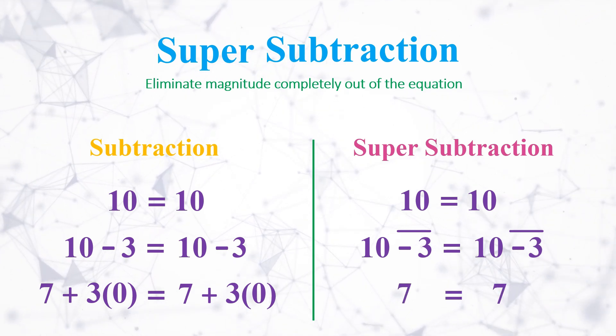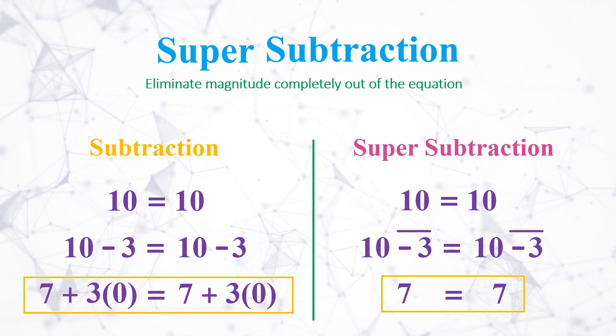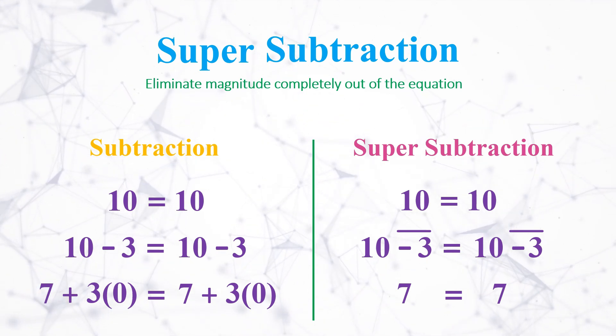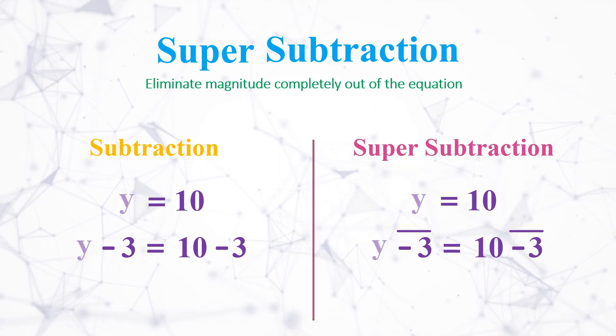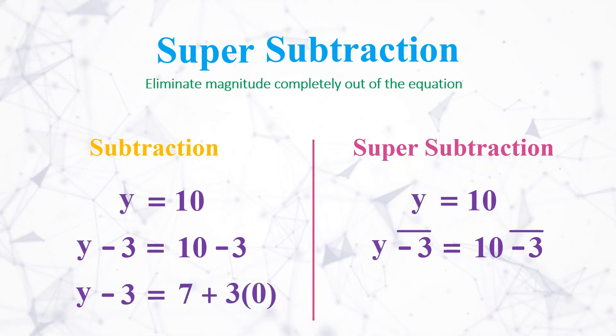But if you add minus 3 as a super subtraction on both sides, then it will be 7 equals 7. And note that both of these equations are balanced but completely different.